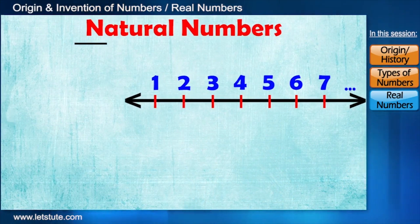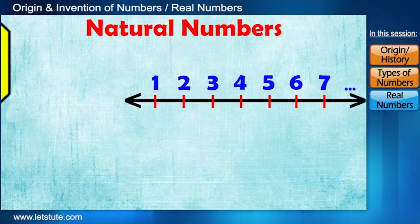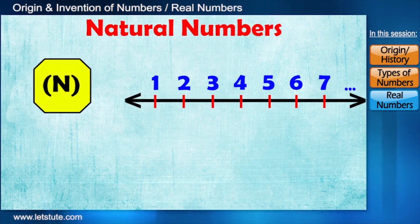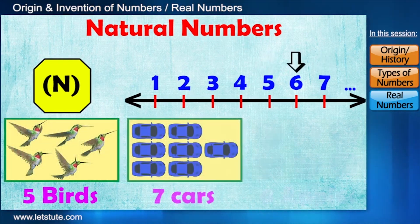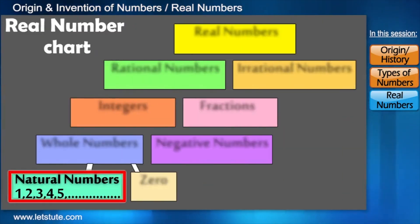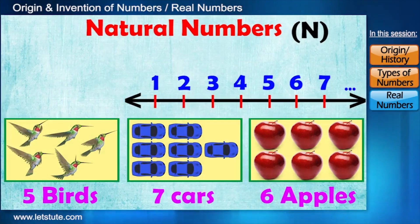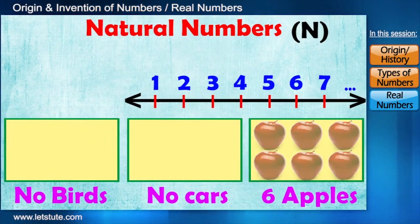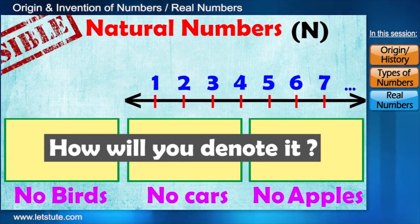We call them natural maybe because they came naturally when we started to learn counting. Set of natural numbers are denoted by the letter N. And by this set we are now able to say that, there are 5 birds, 7 cars or say 6 apples. But suppose there are no birds, no cars or no apples, then how will you denote it? It's not possible right?